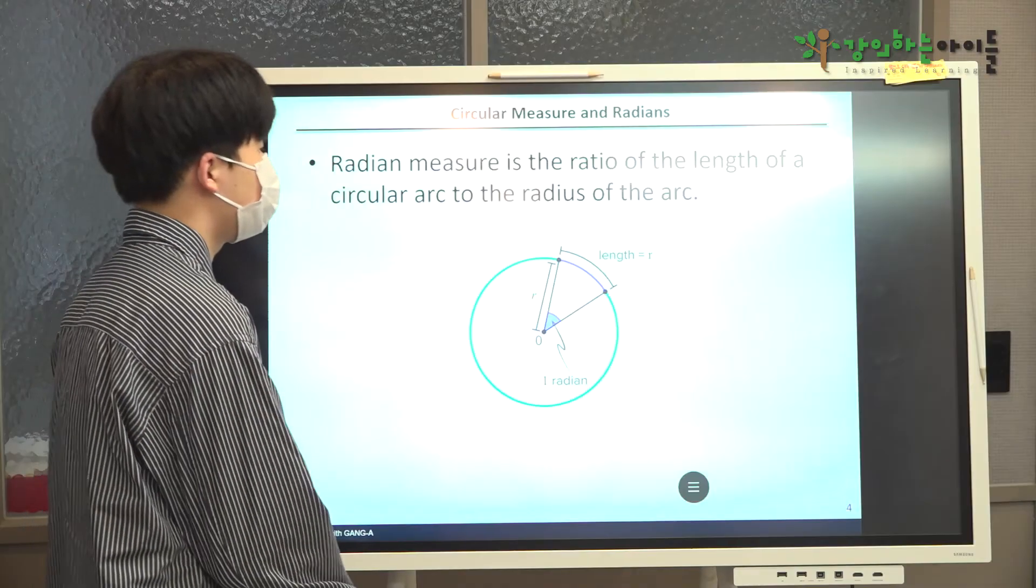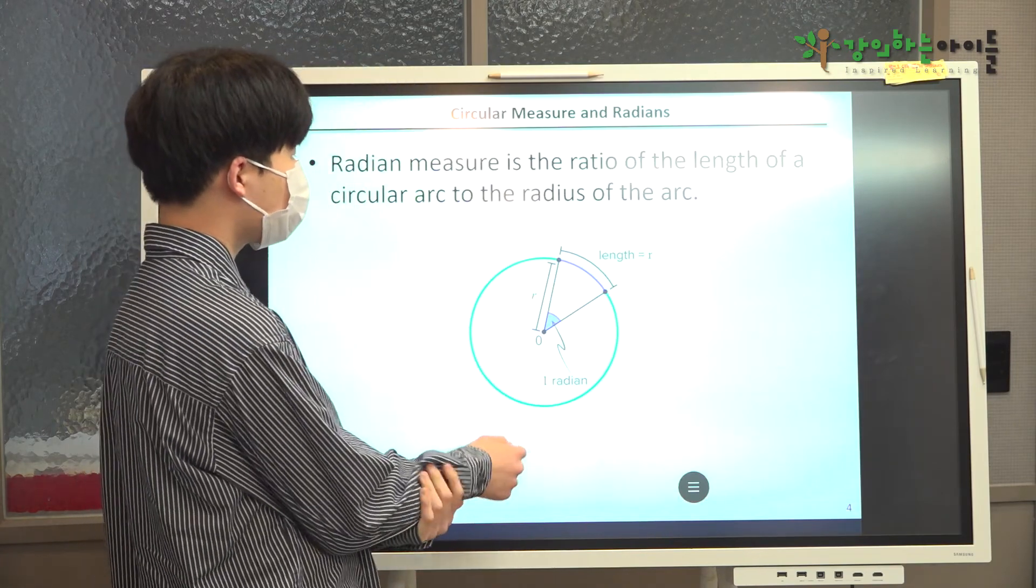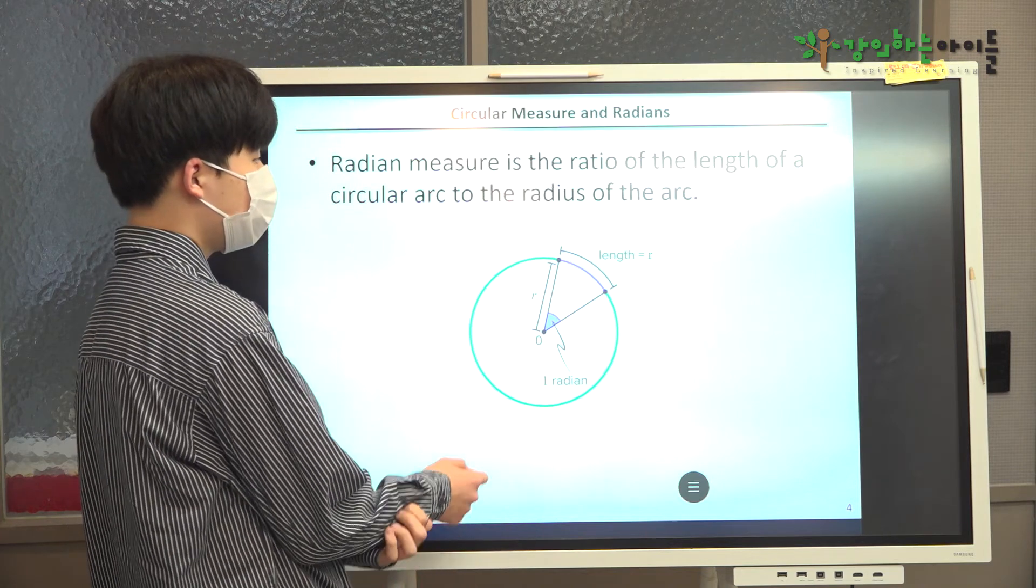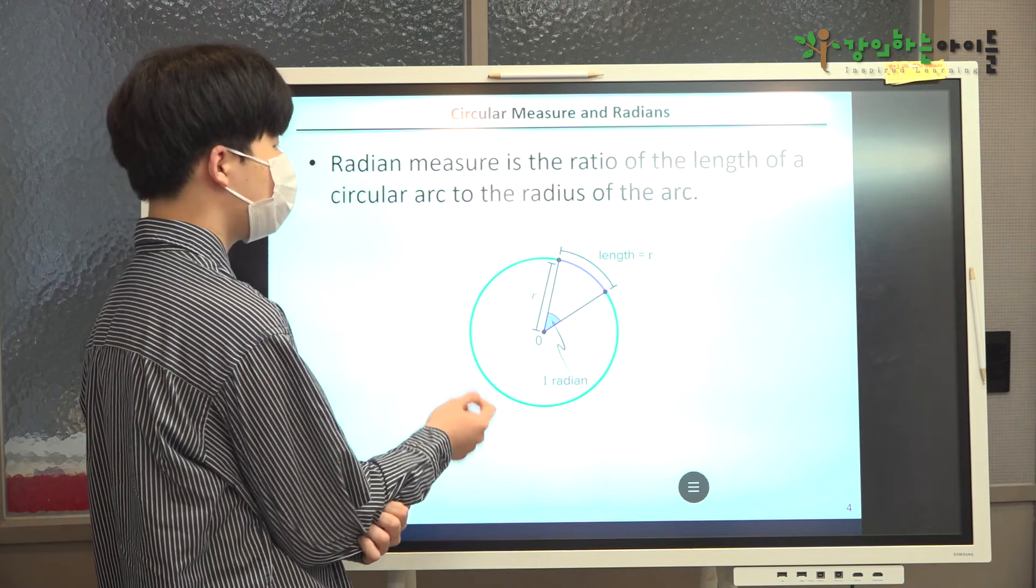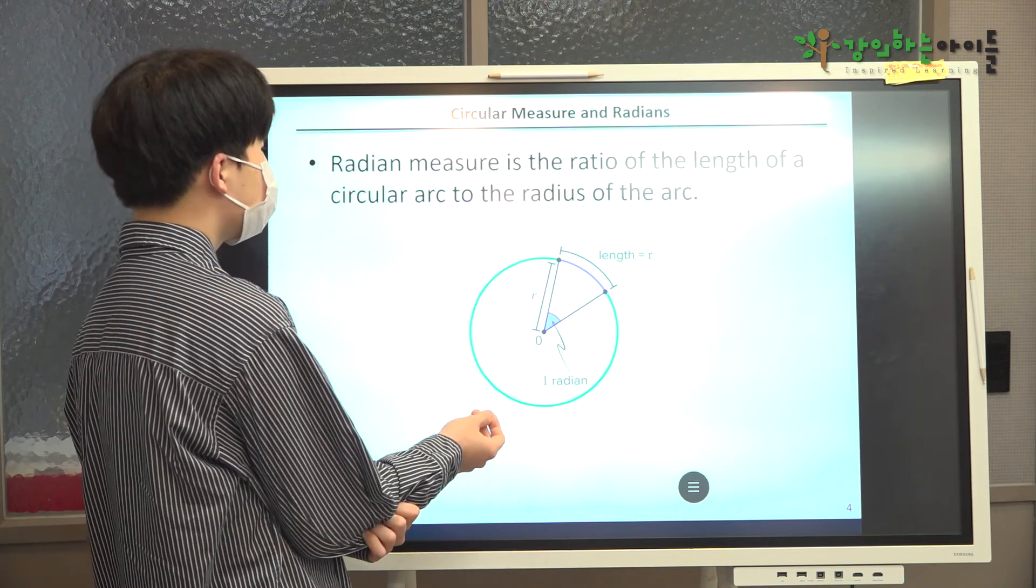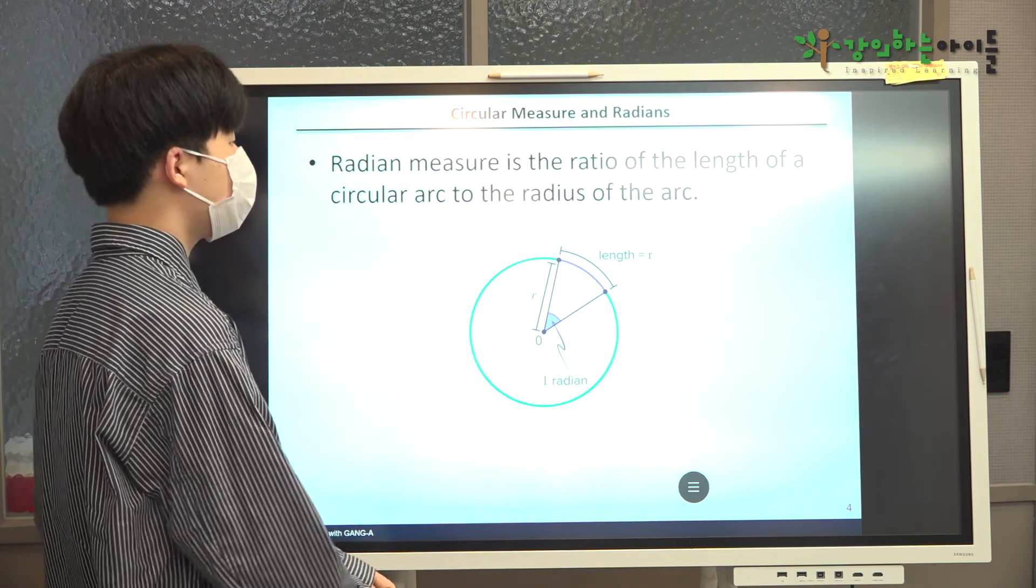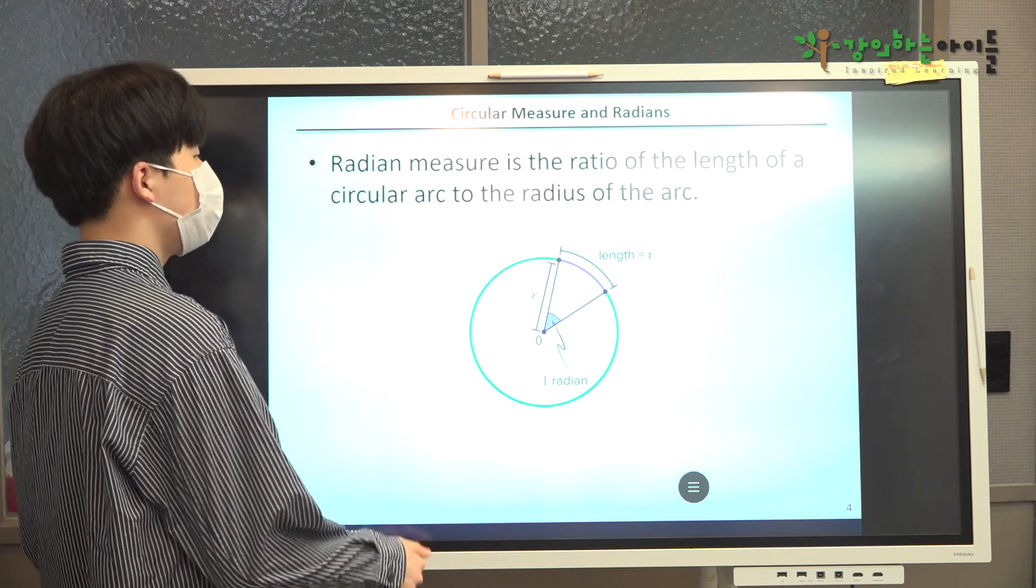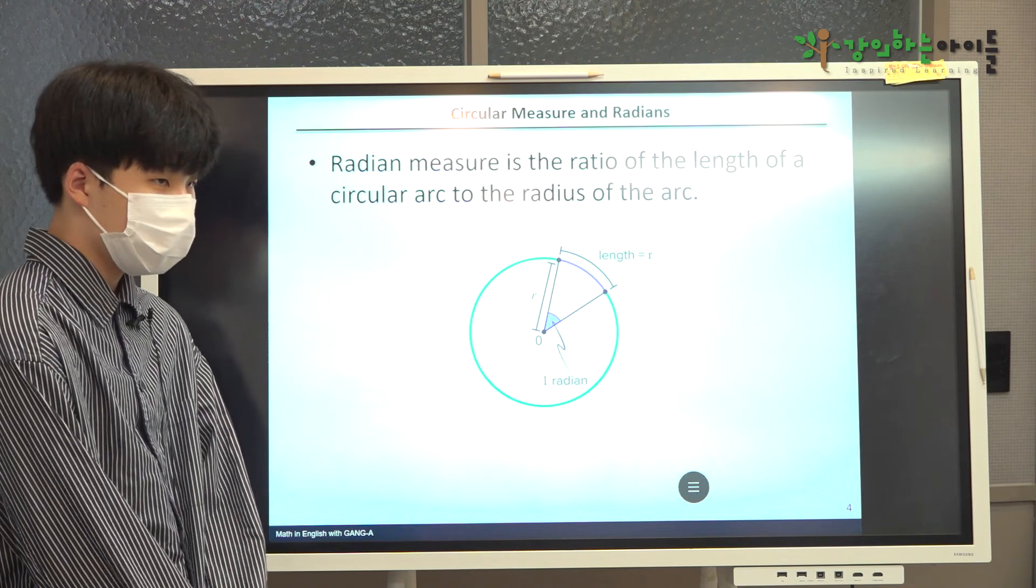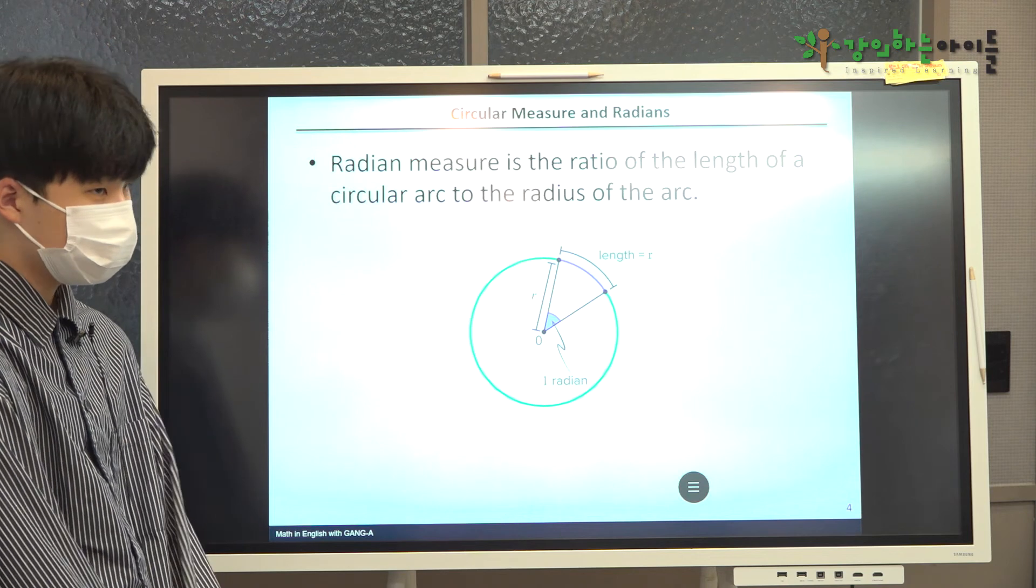Radian measure is the ratio of the length of a circular arc to the radius of the arc. And this figure shows the definition of one radian, where we can see the length and the radius of the arc are the same. Okay, good, Kevin. Yeah, you explained very well. Because radian measure is not familiar to all of us, right? Okay.